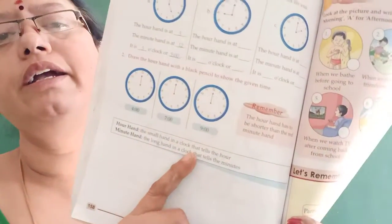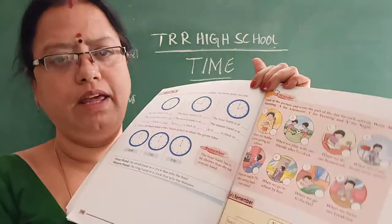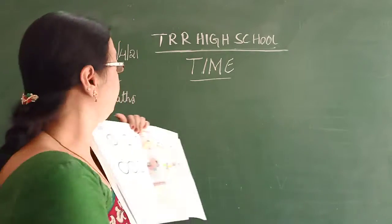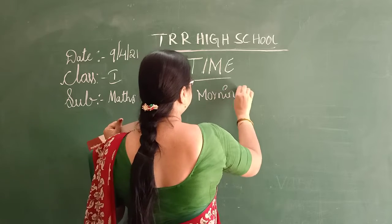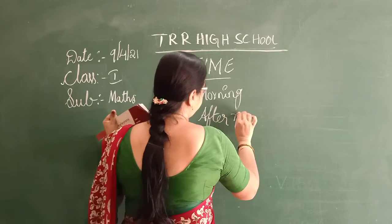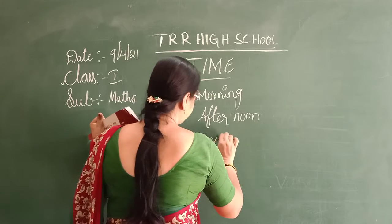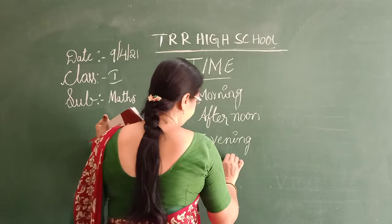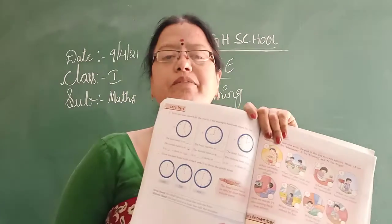Look at this picture — some pictures are there. You have to write the part of the day for each activity. M means morning, A means afternoon, E means evening, and N means night.